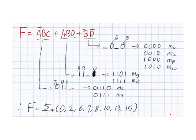Suppose we have a function given as follows. We first find the most simplified expression and then draw circuits out of that. If the given function is given as a boolean expression, we need to find all the minterms or maxterms so that we can construct a k-map.